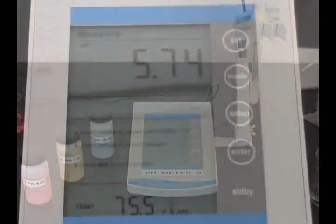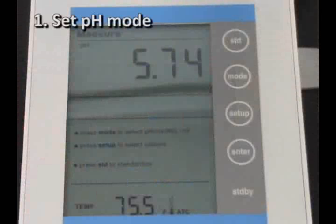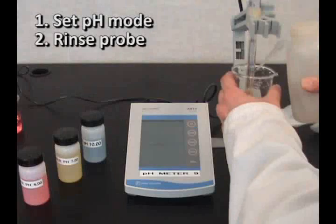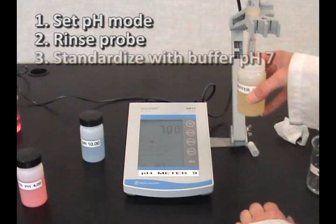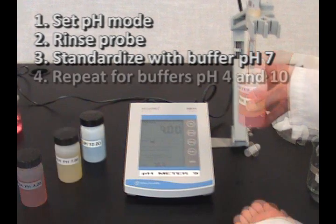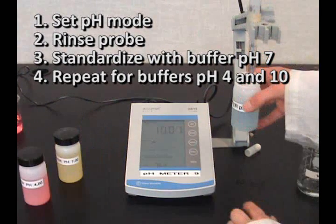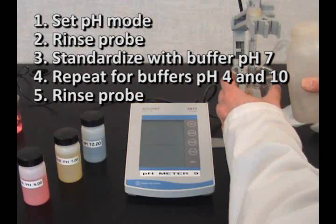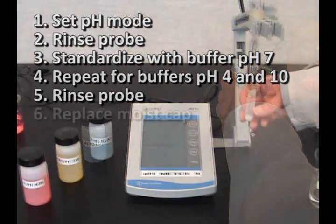Let's review the steps. Set to pH mode. Rinse probe. Standardize buffer 7 while swirling. Repeat for buffers 4 and 10. Rinse probe. Replace moist cap.